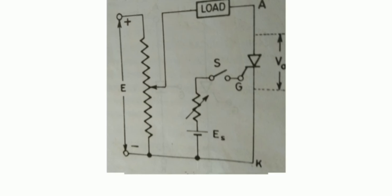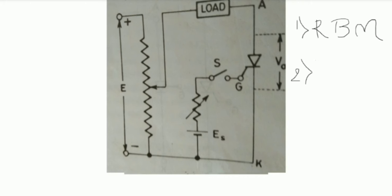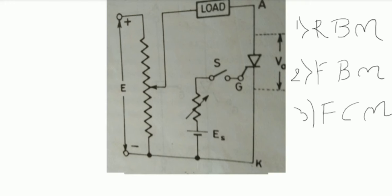Now we will look at the static V-I characteristics of the thyristor. The circuit symbol shows a potential divider with an anode, cathode, and gate. There are three modes: reverse blocking mode, forward blocking mode, and forward conduction mode. We will discuss each with respect to the characteristics.